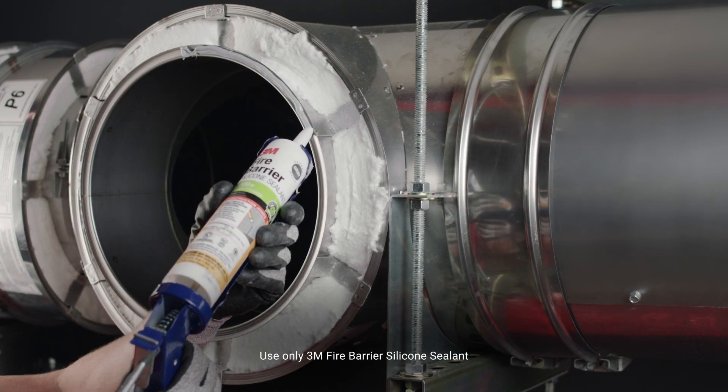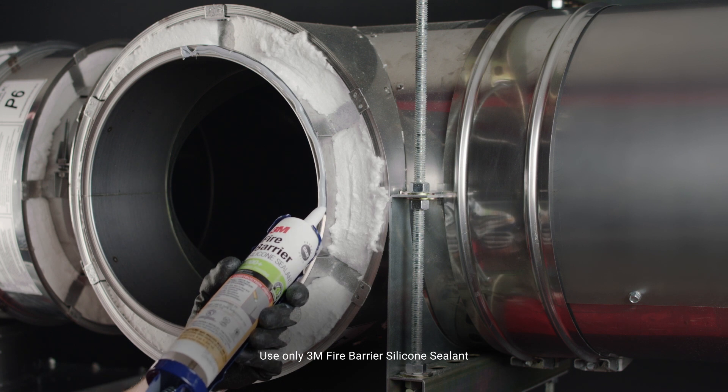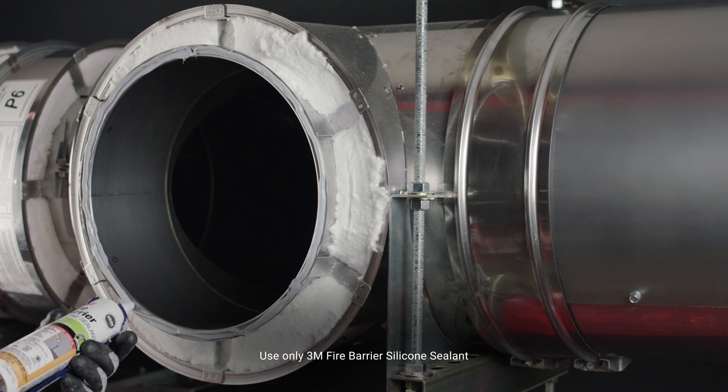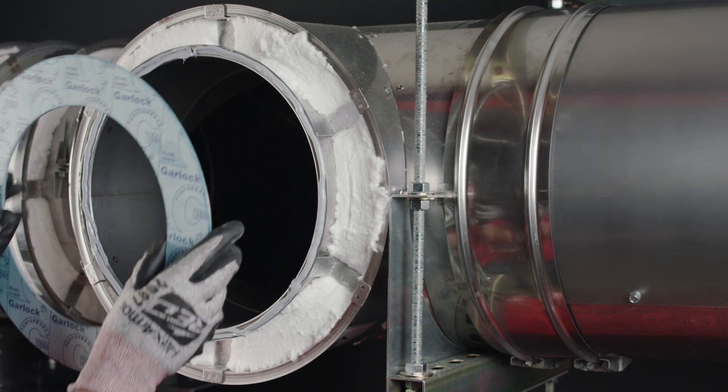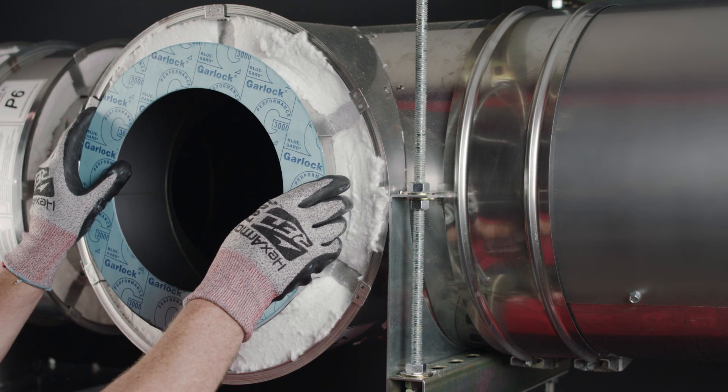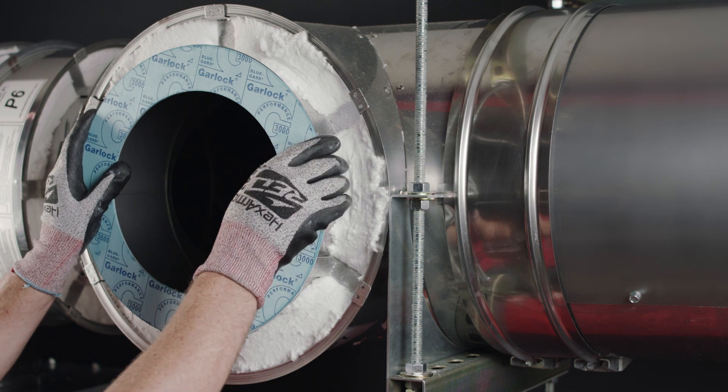Apply a quarter inch continuous bead of sealant to the flange of the T. Center the grease dam over the opening of the T with the gasket side facing out and apply pressure to the grease dam to create a positive bond.